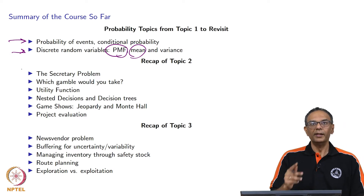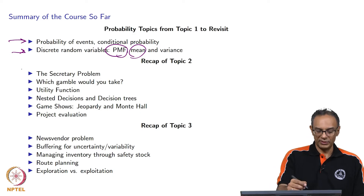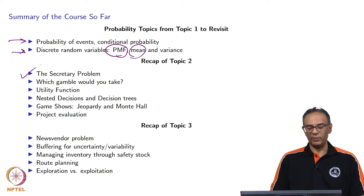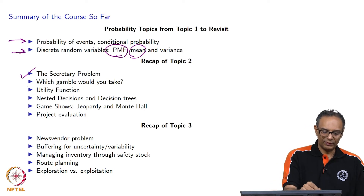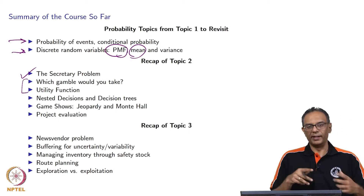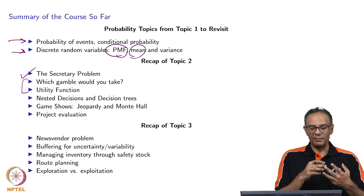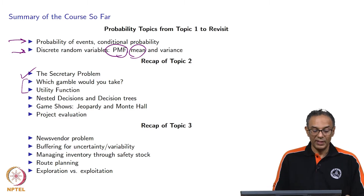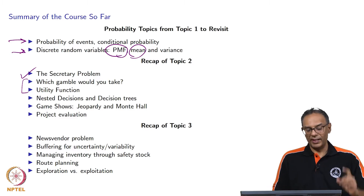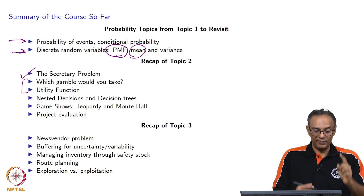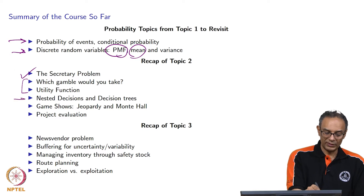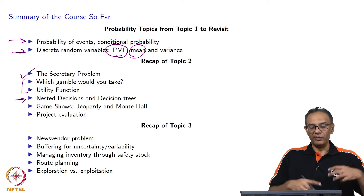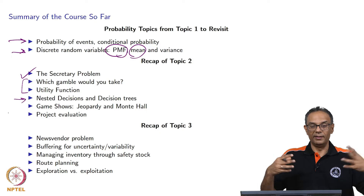From topic 2, we looked at making one-time decisions such as in the secretary problem, where we figured out what is the best way to select a secretary. Then we talked about utility functions, where we were looking at three options to gamble — A, B, and C — with various probabilities and various payoffs and figured out what we should do. But again, remember that is a one-time decision, both the secretary problem and the utility function.